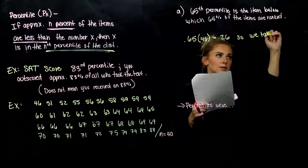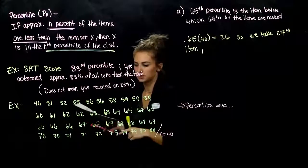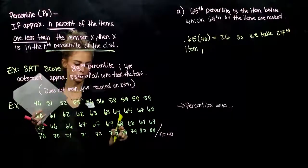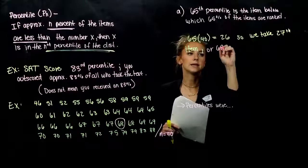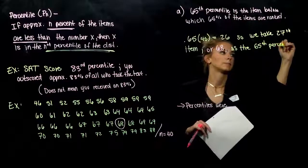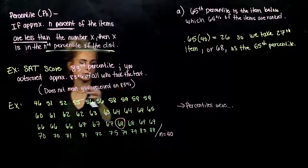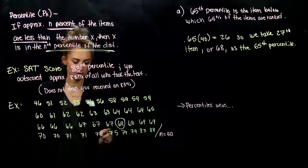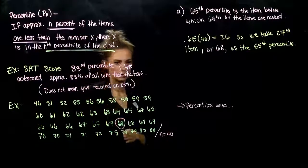Counting through the data grouped in tens: 10, 20, then 21, 22, 23, 24, 25, 26, 27 — the 27th item is 68. So 68 is the 65th percentile. That marker means anything to the left, underneath it, fits 65% of all the data items. 65% of 40 is 26 items — do 26 items fit below that marker? Yes: 26 of them fit underneath, confirming 68 is correct.